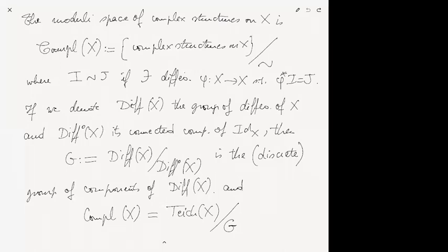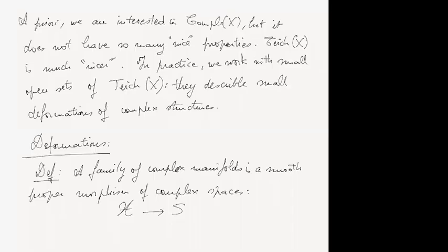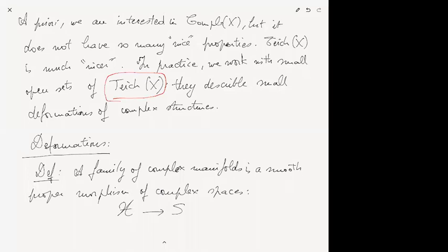A priori, if we want to understand various complex structures on X we should be interested in Comp(X), but the problem is that it usually doesn't look very nice — for instance it's not Hausdorff and can be singular. Teich(X) is much nicer, which is why in practice we usually work with small open sets of Teich(X) that describe small deformations of complex structures on X.